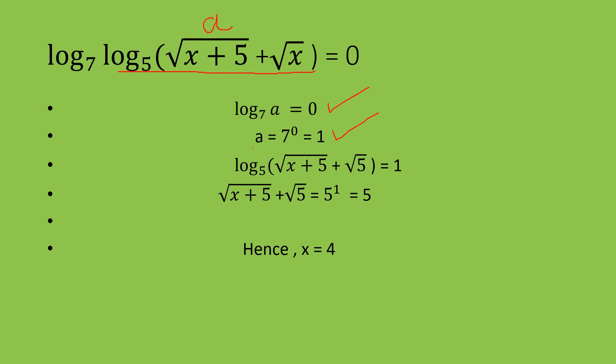Now, put the value of a as it is in the question. You get log of under root of x plus 5 plus under root of 5 to the base 5 is equal to 1. From here, you can calculate under root of x plus 5 plus under root of 5 is equal to 5 power 1, which is equal to 5.